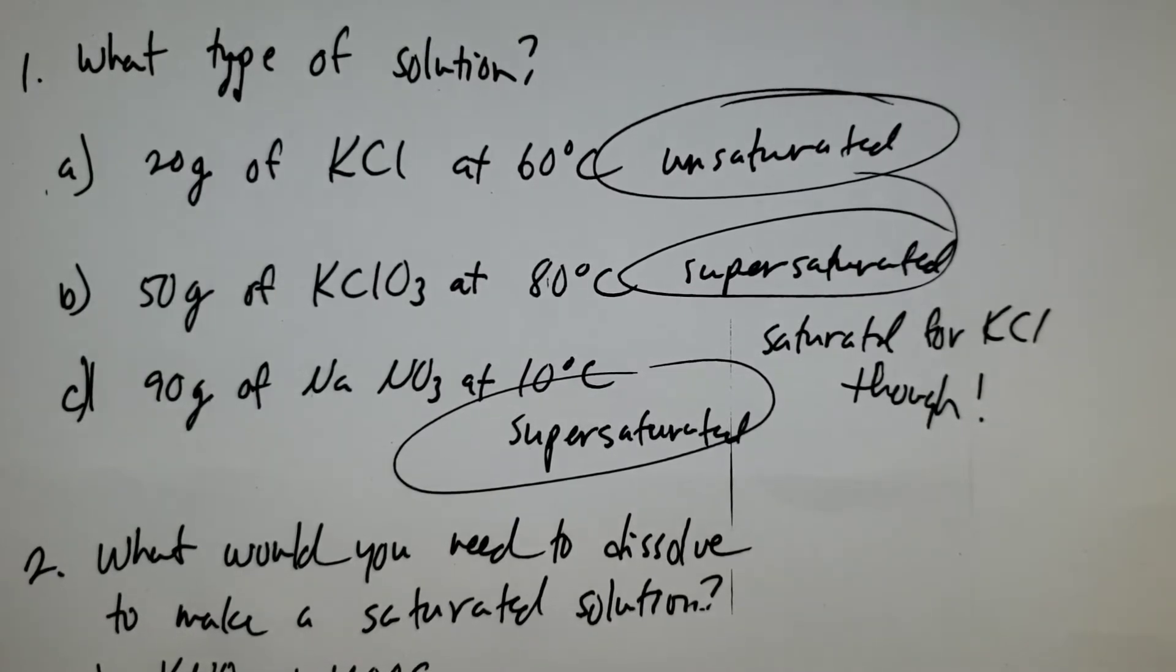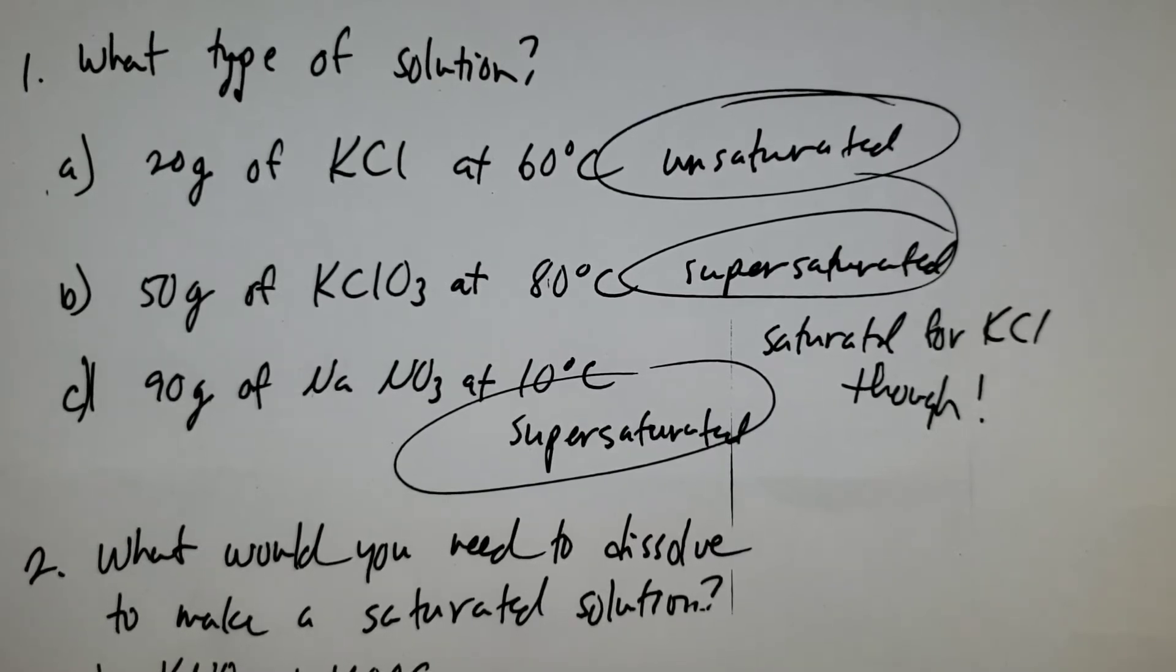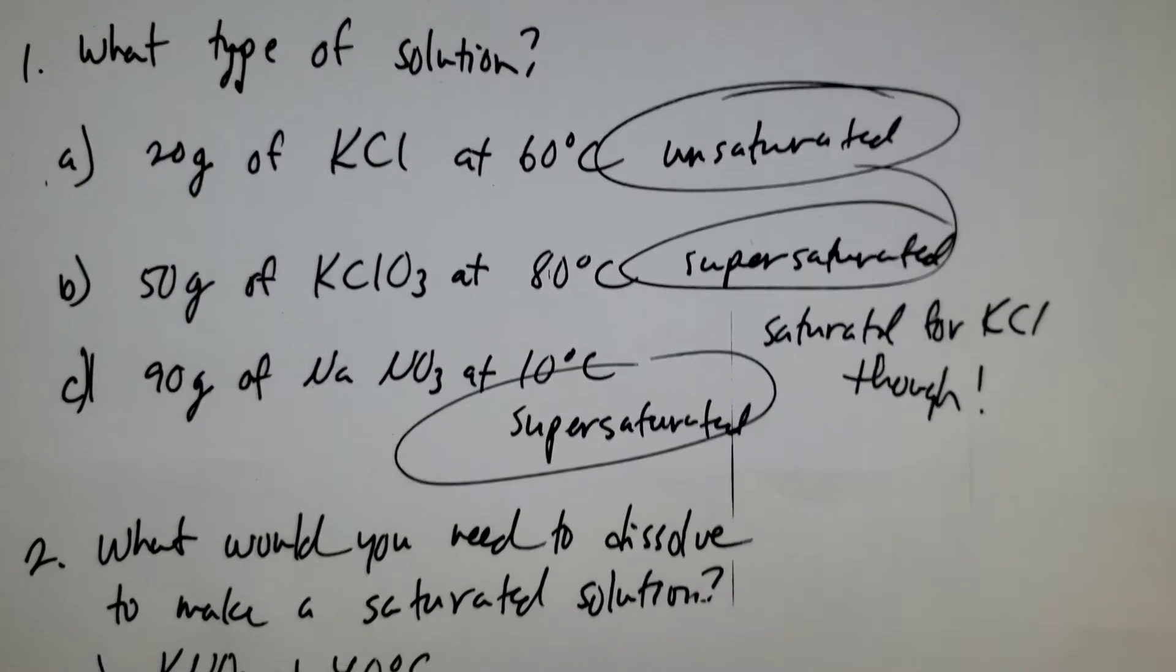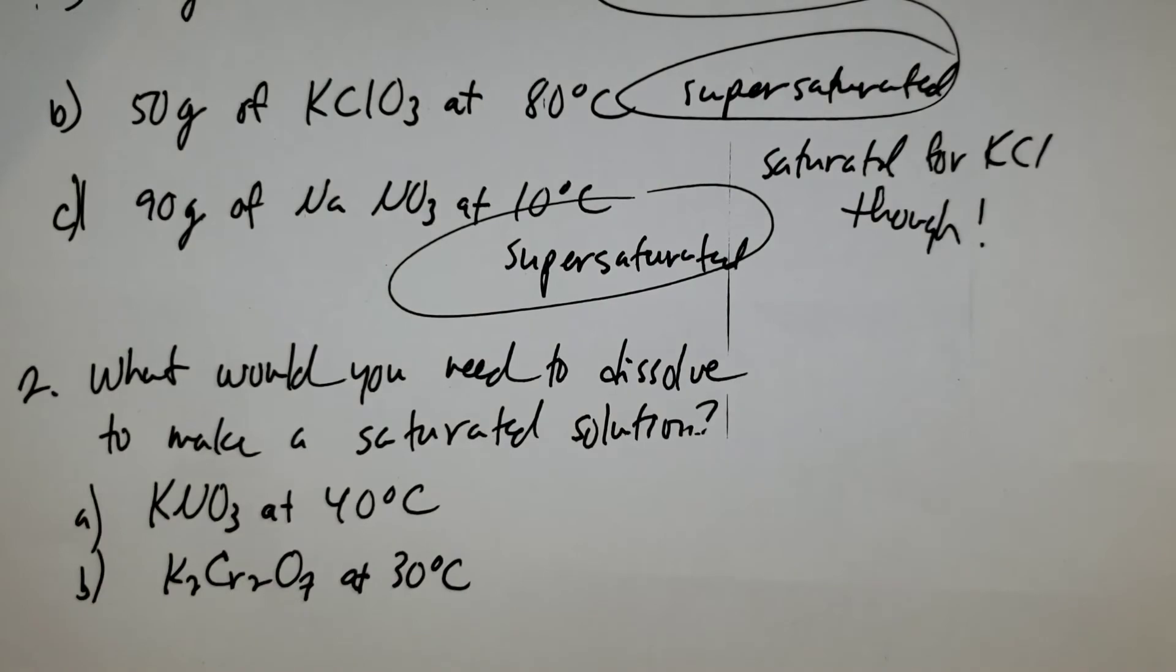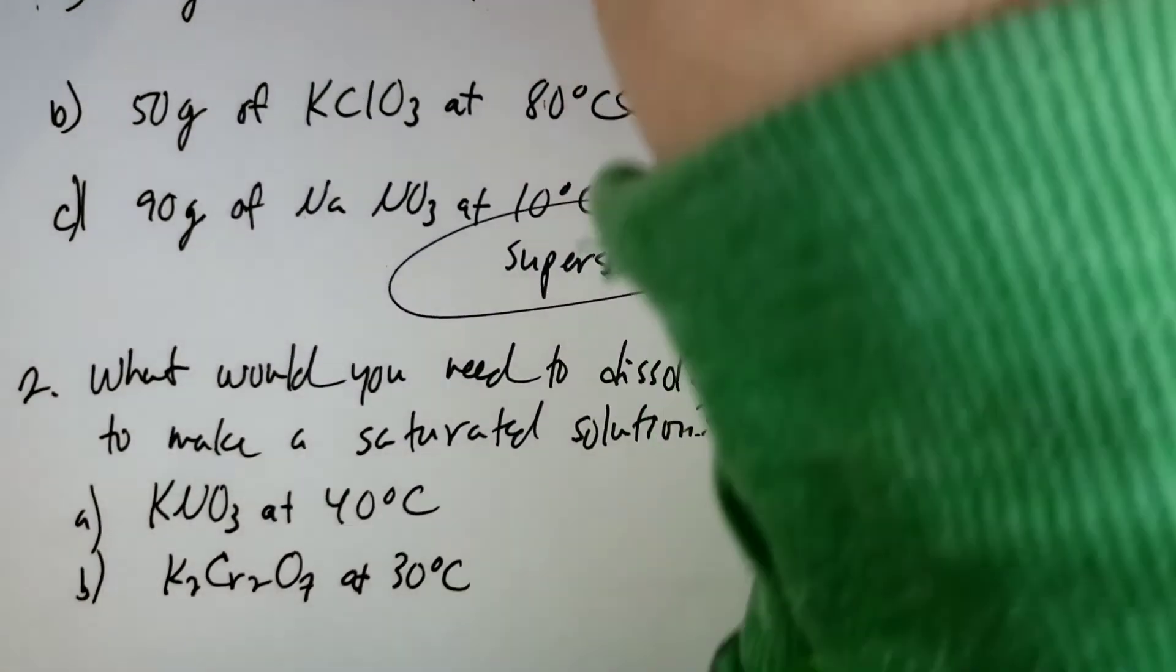So let's say KNO3 at 40 degrees C. And then let's say K2Cr2O7 at 30 degrees. So what would I have to dissolve to make a saturated solution?